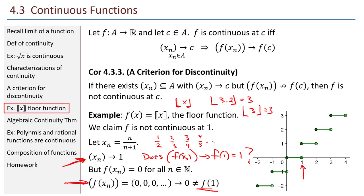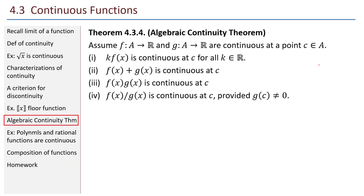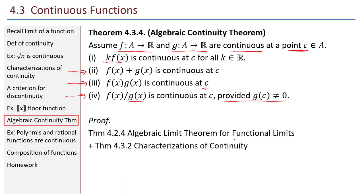Proving continuity by epsilon-delta or by the sequential characterization is valid, but there are stronger methods. The algebraic continuity theorem: assume f and g both go from A to R and are both continuous at point C. Then: a constant times f is continuous; the sum f plus g is continuous at C; the product f times g is continuous at C; and the quotient f over g is continuous at C, provided g of C is not zero. This follows from the algebraic limit theorem for functional limits and the sequential characterization of continuity.